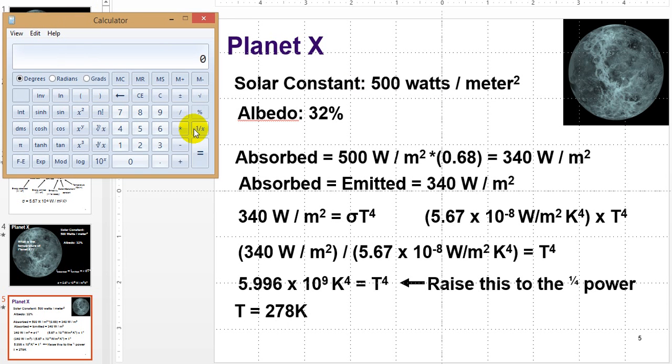The solar constant is 500, and we're going to multiply it by 0.68, and we end up with 340. Fantastic. It's 340 watts per meter squared, because that's what's coming in with the solar constant. So that's the energy, and we know because it's at thermal equilibrium that that amount is equal to what's being emitted, is equal to what's being absorbed.